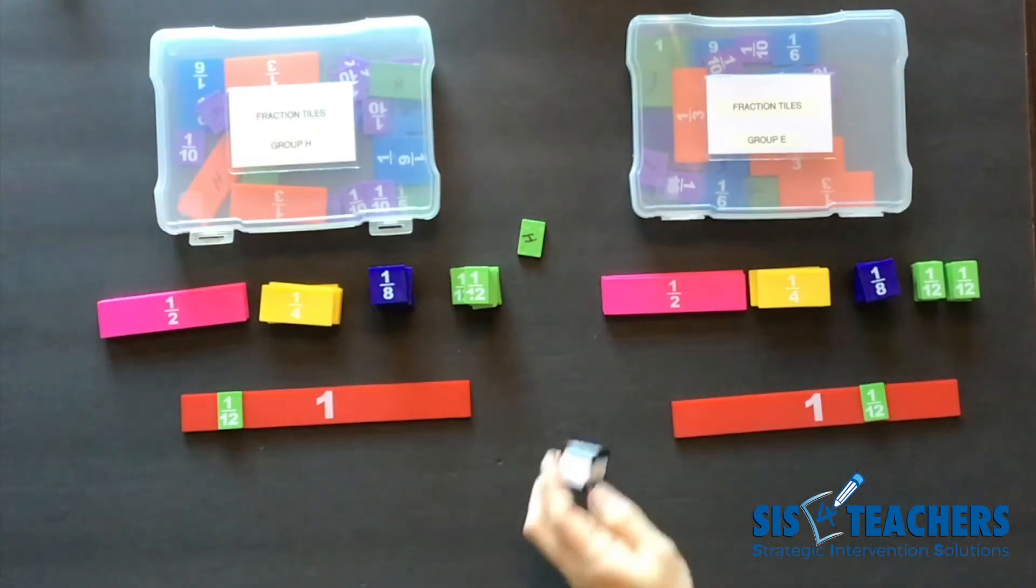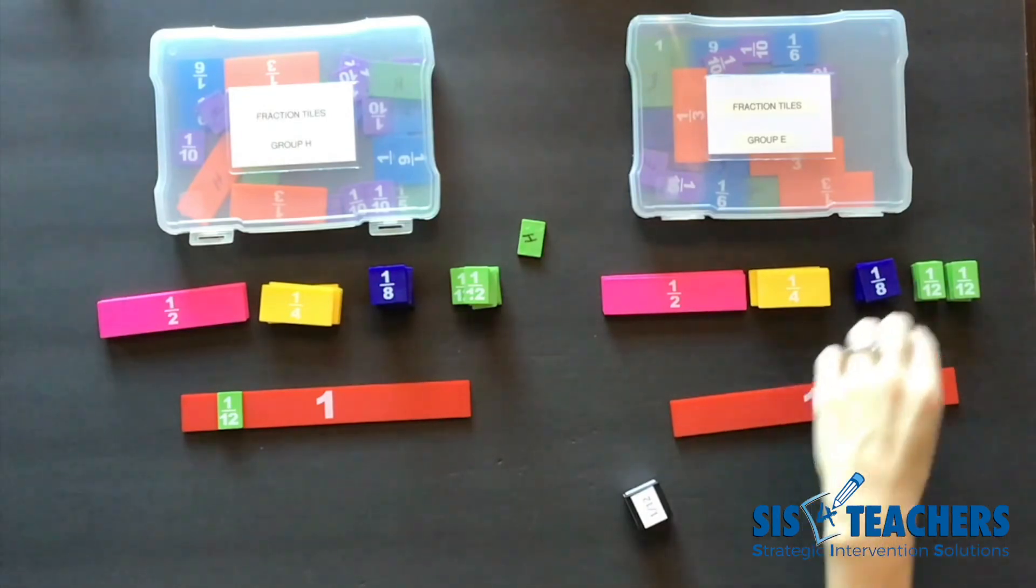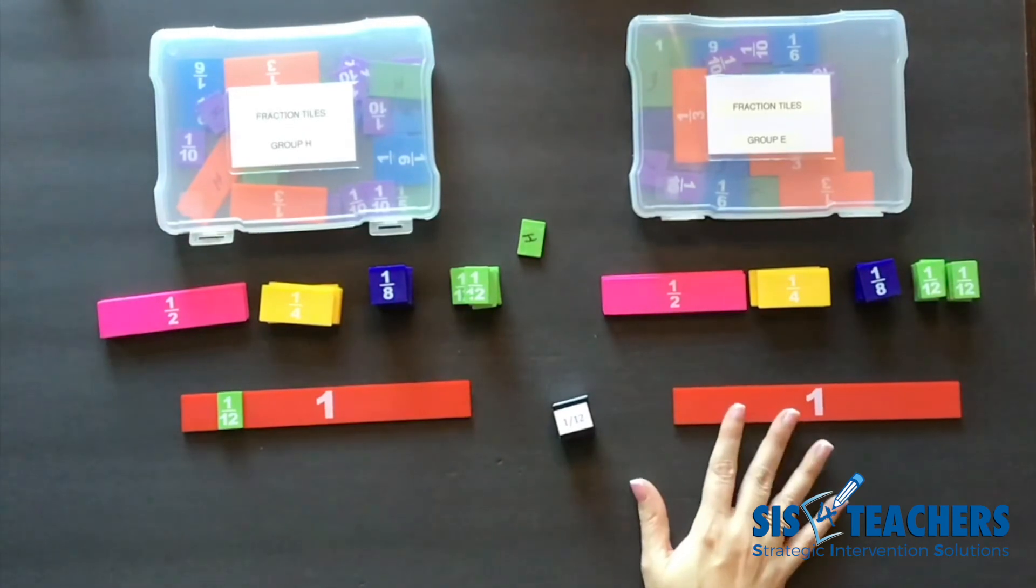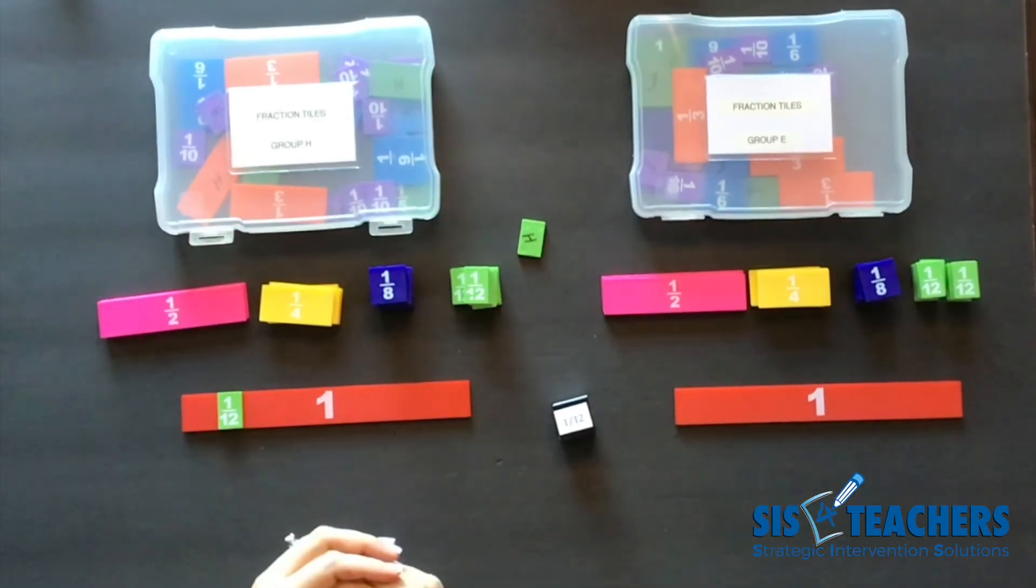My partner ends up winning with the 1/12. So she has completely uncovered her one whole from the original two halves that we had.